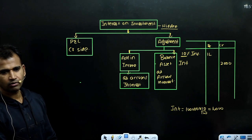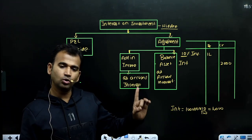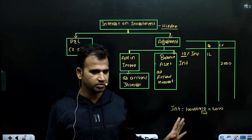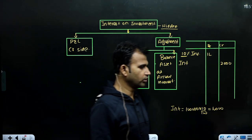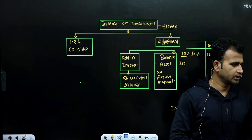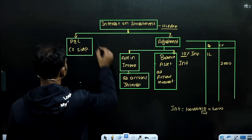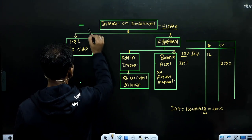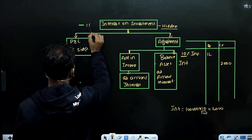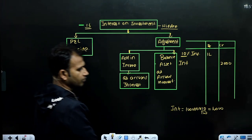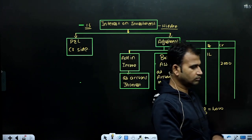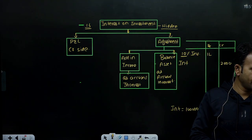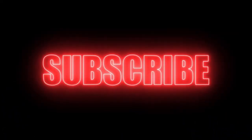कोई doubt? जिसको Interest on Loan वाला समझ में आ गया, उसको ये भी आ जाएगा — कोई इसमें समस्या नहीं। ये adjustment number कौन सा था? कोई doubt हो तो बताईए।